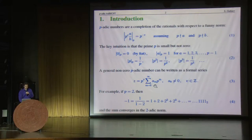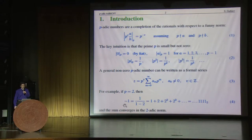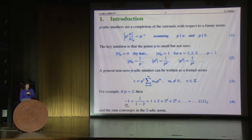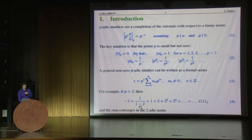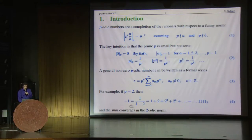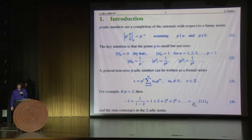Let's get a little more intuition for this kind of expansion by working out the p-adic expression for the number minus 1 in the case where the prime P equals 2. First, we write minus 1 as 1 divided by 1 minus 2. That was trivial algebra. And then we expand this second expression as a geometric series, which is okay in the 2-adic numbers because 2 is small. So minus 1, when you write it as a p-adic — a 2-adic — expansion, expands forever to the left, and every digit is 1.